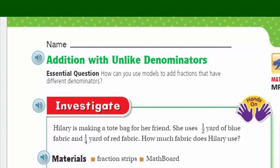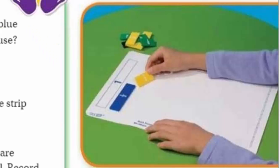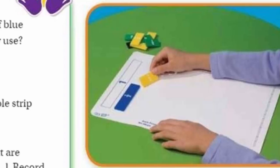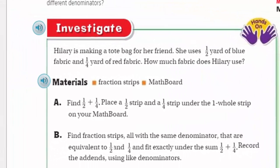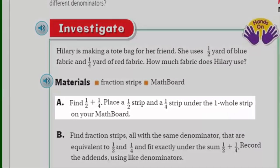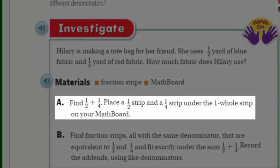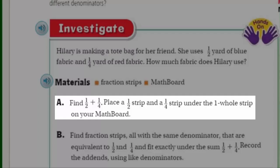First of all, materials. You're going to see the materials are fraction strips and a math board. Take a look at our friend here in the picture. See what he's doing? That, my friends, is a math board. Well, let's get back to our problem and look at the first one, where it's like step A. It says we will find one-half plus one-quarter.